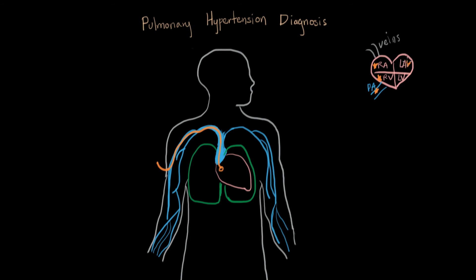We can even measure the left atrium. These catheters are named after the people who came up with the technique, so they're called the Swan-Ganz catheters. Their purpose is to measure the pulmonary artery pressure and the pressures in the other chambers, and this is basically diagnostic for pulmonary hypertension because we're just looking at whether it crosses the threshold into abnormal.